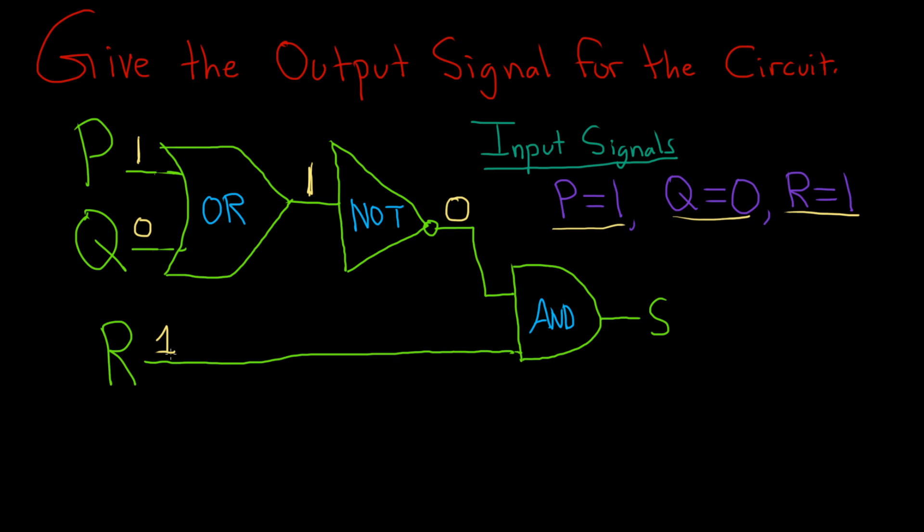So now we have 1 and 0 entering this AND gate. AND will only be true if both are true. So you have 1, which is true, and 0, which is false, so in this case you end up with 0. Remember, the only time you're going to get a 1 from an AND gate is if both are 1s. So the output signal in this case is 0.